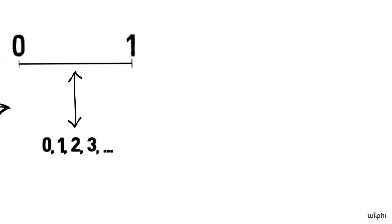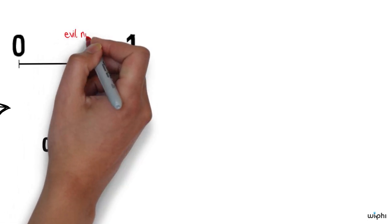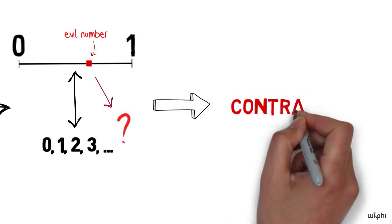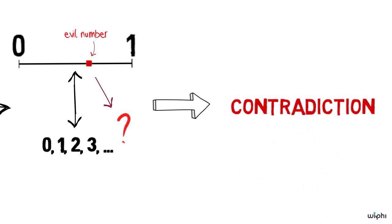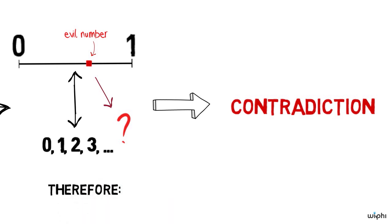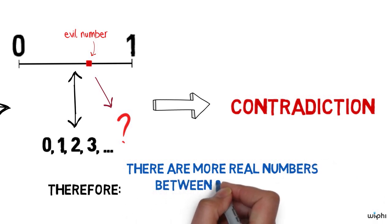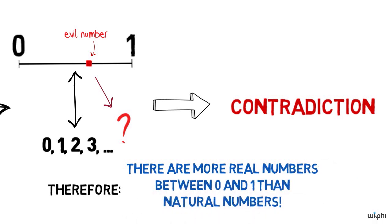So here's what's happened. We assumed for reductio that you can assign a different natural number to each real number between 0 and 1. But then we found a real number — the evil number — which isn't on that list. It contradicts our assumption that we had assigned a natural number to every real number between 0 and 1. So our assumption must be false, and because what we assumed is the negation of what we wanted to prove, it follows that what we wanted to prove is true: there are more real numbers between 0 and 1 than natural numbers.